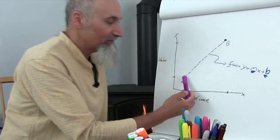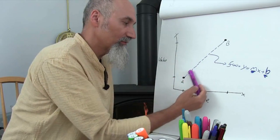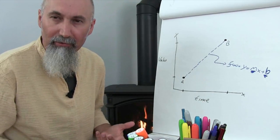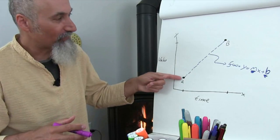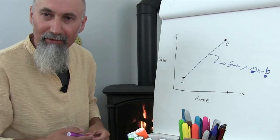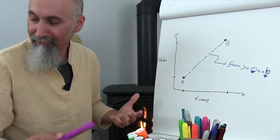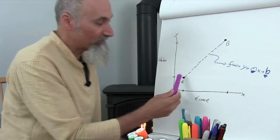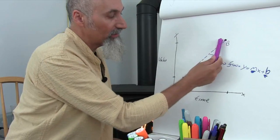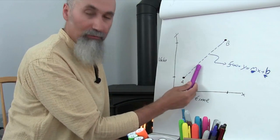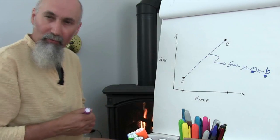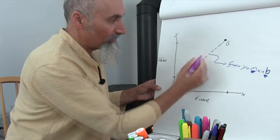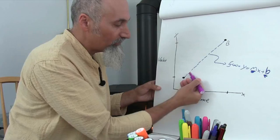What if this wasn't a simple linear movement? What if this thing fluctuates a little, which is really what happens in the real world? In the real world, very few things jump from one value to another in one shot. We have continuous growth — things growing slowly, sometimes exponentially, sometimes going wavy.